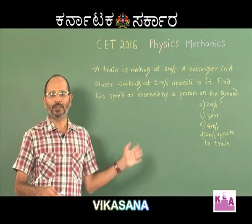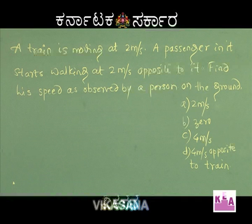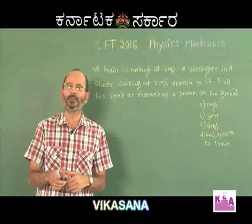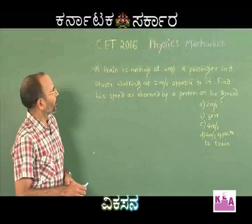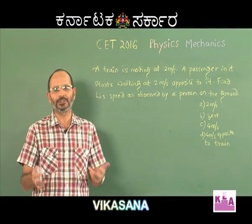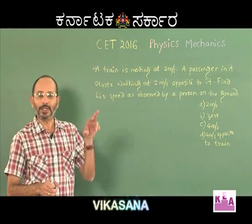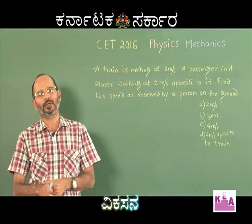Let us use this concept to solve a simple problem. A train is moving at 2 meters per second. A passenger in it starts walking also at 2 meters per second but in the opposite direction. Find his speed as observed by a person on the ground. Taking the train's direction as positive, the passenger walks at minus 2 meters per second. Note that the passenger's speed of 2 meters per second is given with respect to the train, not with respect to the ground.